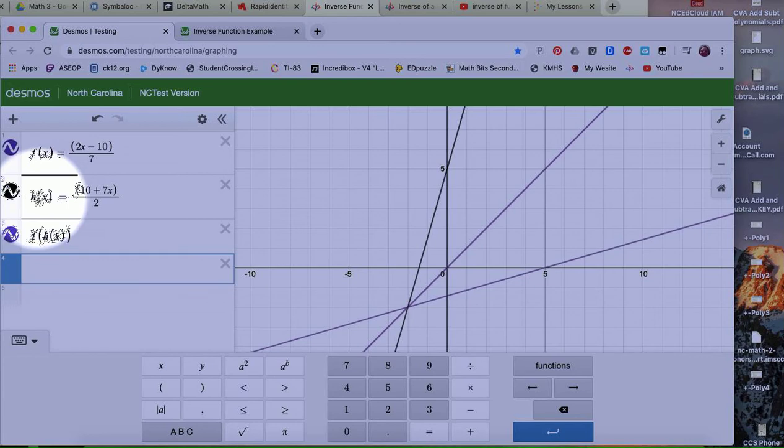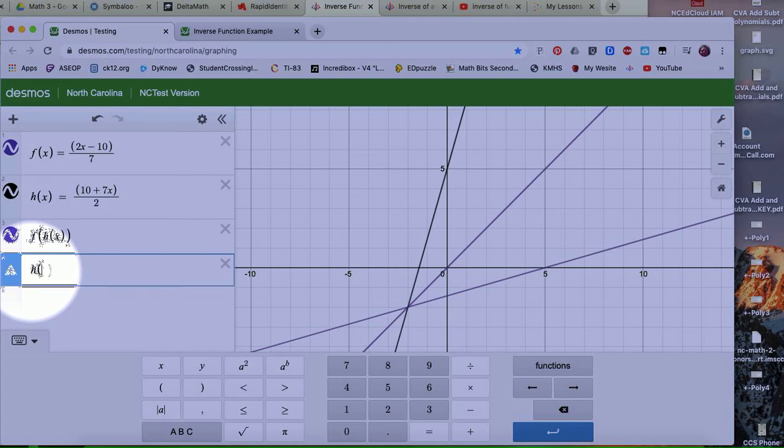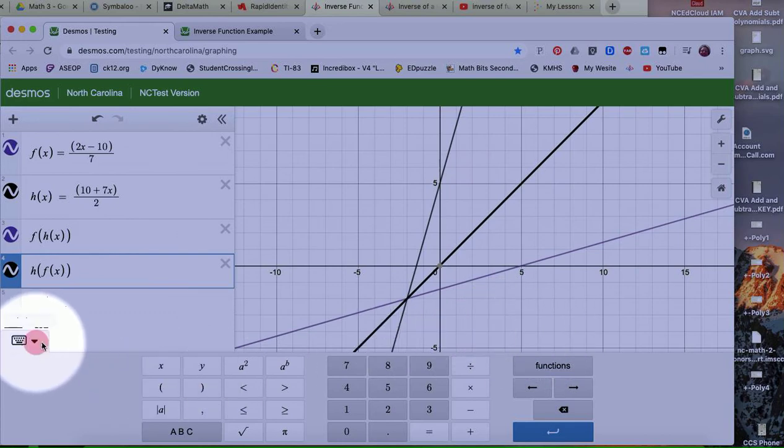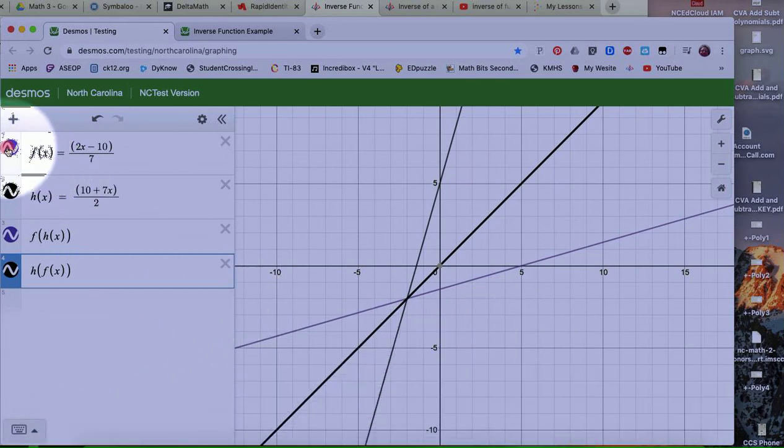Now I'm going to do the opposite. I'm going to take my h of x and put f of x for that. So I've got my h, I'm going to replace f of x in the value here, and I want to see if they're the same line. I'm asking if they're inverses of each other. So here I'm going to eliminate my first two graphs.